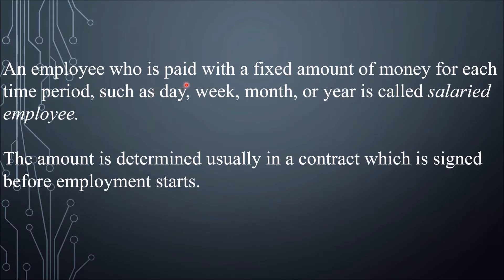An employee who is paid a fixed amount of money for each time period — such as a day, week, month, or year — is called a salaried employee. The amount received by the employee in this case is called salary.